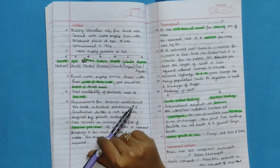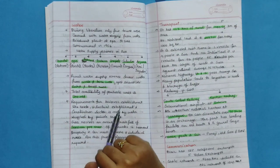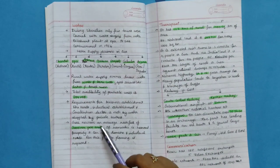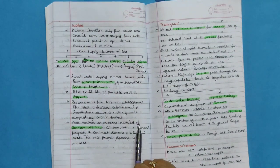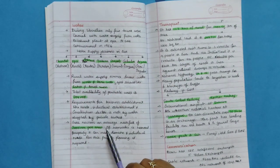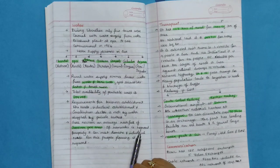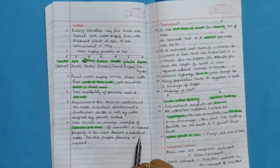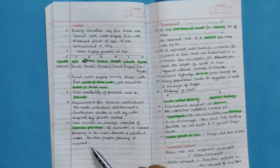Goa receives an average rainfall of 3000 mm per annum. If rainwater is harvested properly, it can meet domestic and industrial needs. For this, proper planning is required.